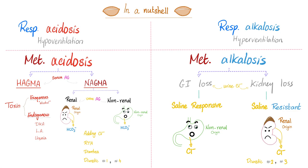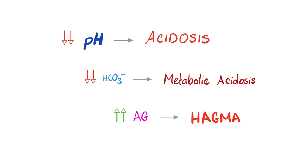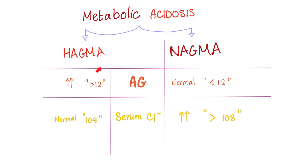In NAGMA, you lost bicarbonate and gained chloride — a negative for a negative to maintain electroneutrality. HAGMA, on the other hand, is normochloremic. When the pH is low, we call it acidosis. pH is low and bicarbonate is low — that's metabolic acidosis. Then you look at the anion gap. If it's normal, it's NAGMA. If it's high, it's HAGMA. HAGMA has a high anion gap, usually greater than 12. NAGMA has a normal anion gap, usually less than 12.